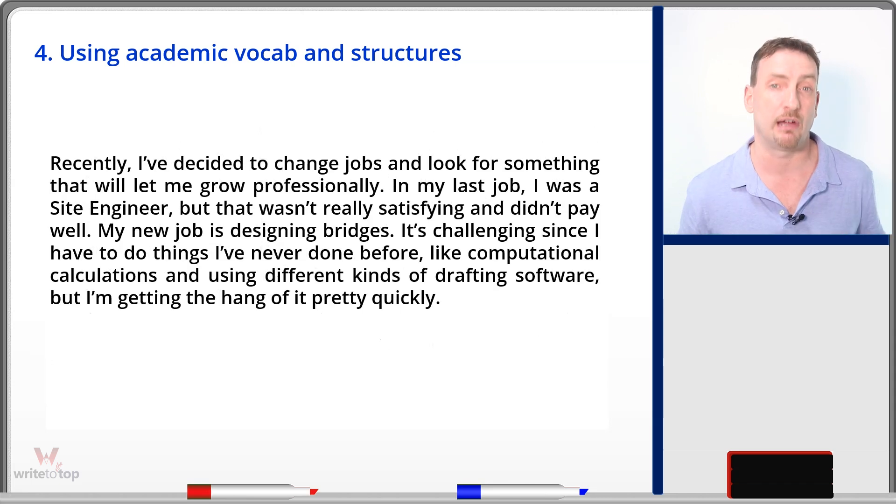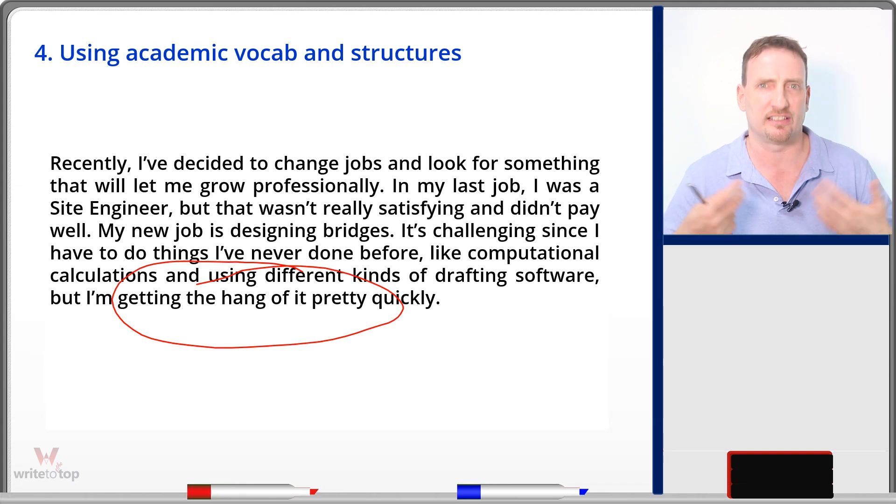Here's how I rewrote this in one paragraph. Recently, I've decided to change jobs and look for something that will let me grow professionally. That's your main idea. In my last job, previous employment is too formal. My last job is to a friend. I was a site engineer, but that wasn't really satisfying and didn't pay well. My new job is designing bridges. It's challenging since I have to do things I've never done before, like computational calculations and using different kinds of drafting software. But I'm getting the hang of it pretty quickly. Getting the hang of it is a very casual expression. Getting the hang of it means starting to understand it pretty easily. You're writing to a friend, be friendly. You're writing to a potential employer, be formal, right? Make sure you know the tone. Make sure you know what words to use, what expressions to use. Don't write an essay. Write a letter, okay? That's a very common mistake people make.